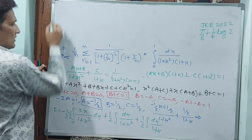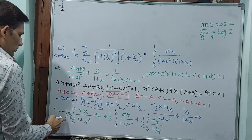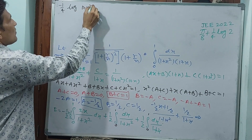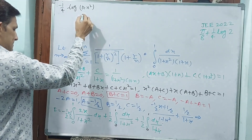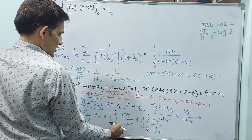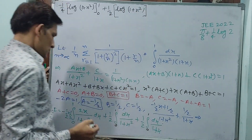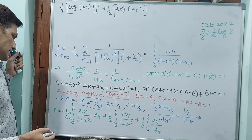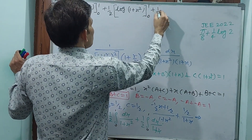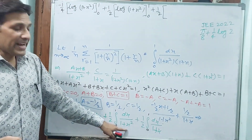Everything is from 0 to 1. Evaluating: minus 1/4 log(1 plus x squared) from 0 to 1, plus 1/2 tan inverse x from 0 to 1, plus 1/2 log(1 plus x) from 0 to 1. Note: the last two are tan inverse x and log(1 plus x) respectively.